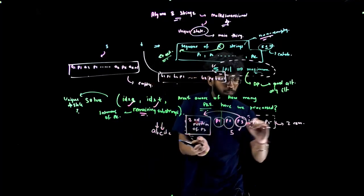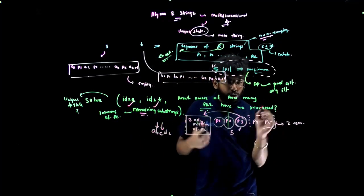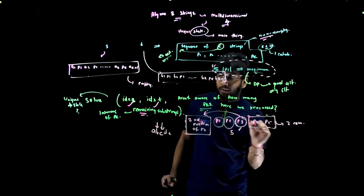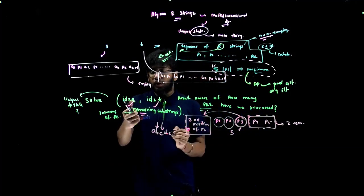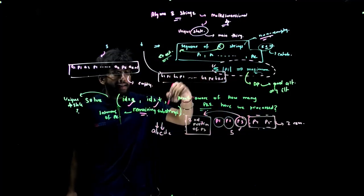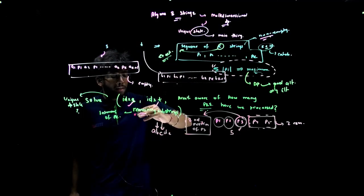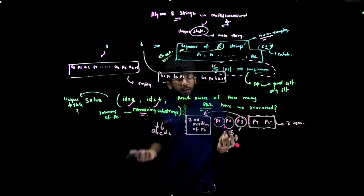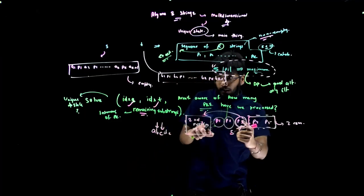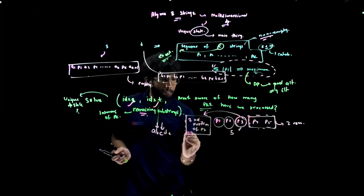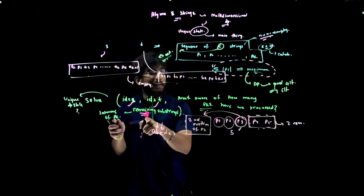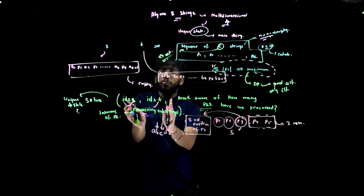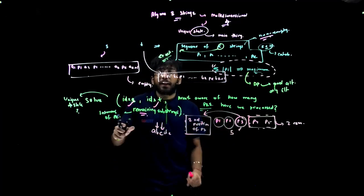Let's take it into a different scenario. For example, if you have p1 to p5, and you know that these two are remaining amongst this, you will have some values of idx_s and idx_t with you, and you'll have the remaining substrings to be two. But this isn't unique, because if you are at the second position in p3, then also this DP is same, and if you are at the third position in p3, then also the state remains the same.